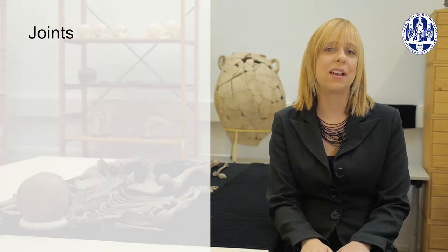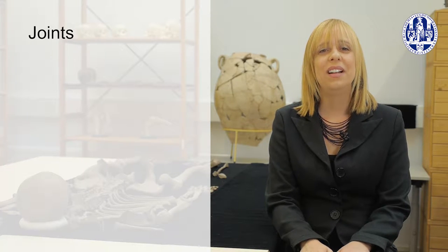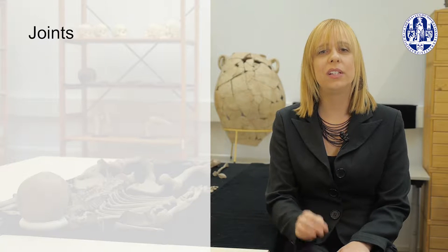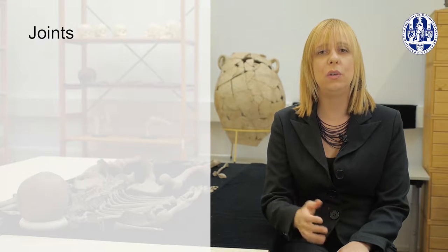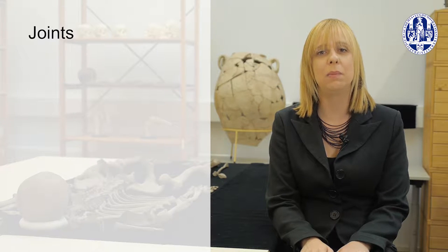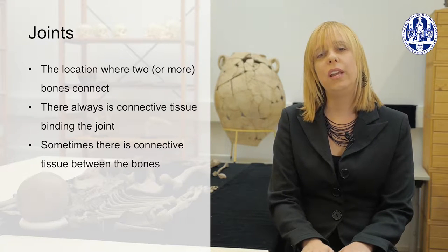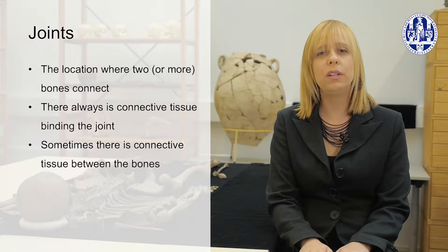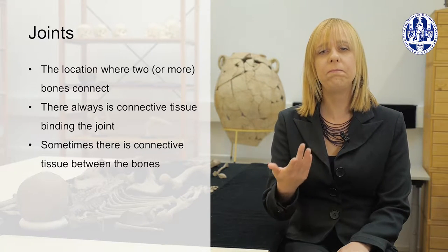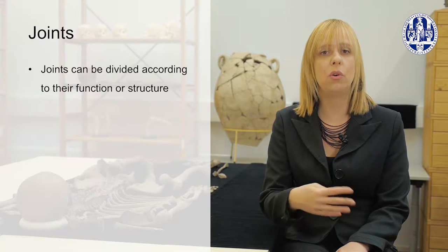The last thing we need to cover before diving into the case studies is joints, because the appearance — specifically the degradation of joints — can be a useful clue about activity patterns in past populations. A joint or articulation is a location where two bones connect, but in some cases the bones don't connect directly.